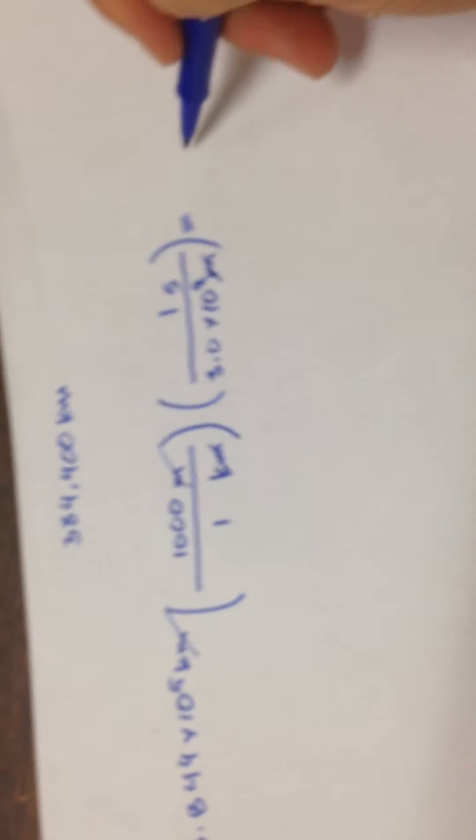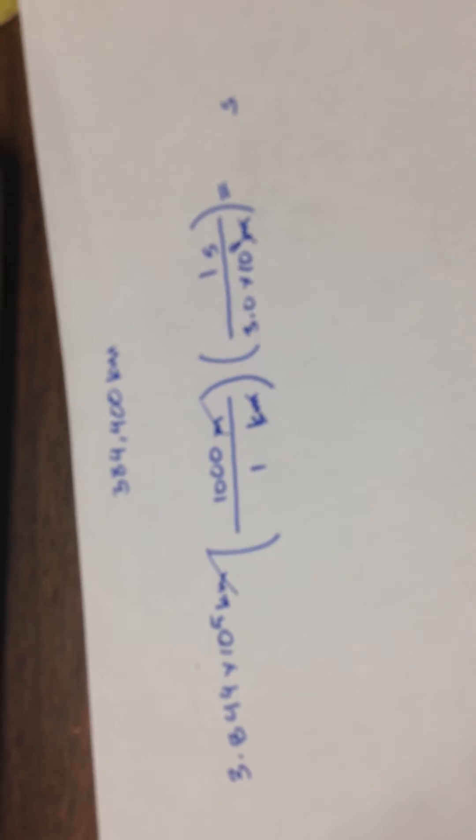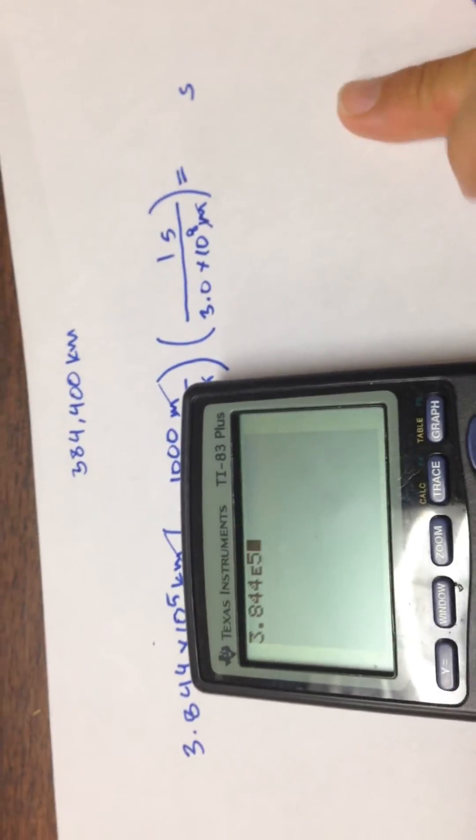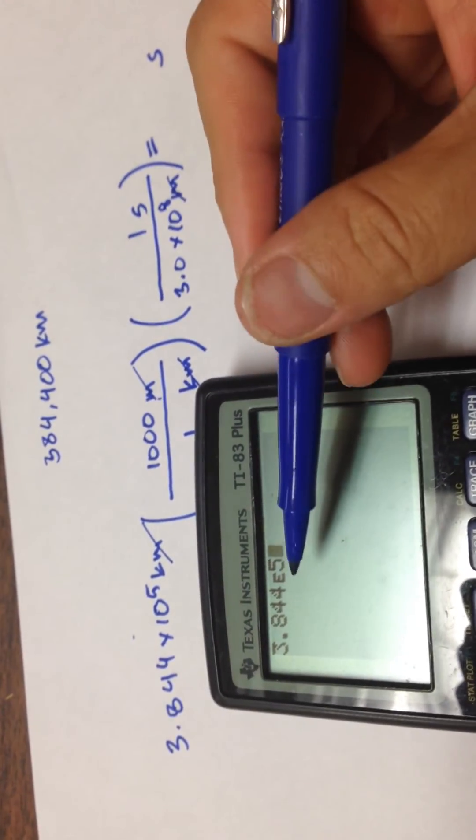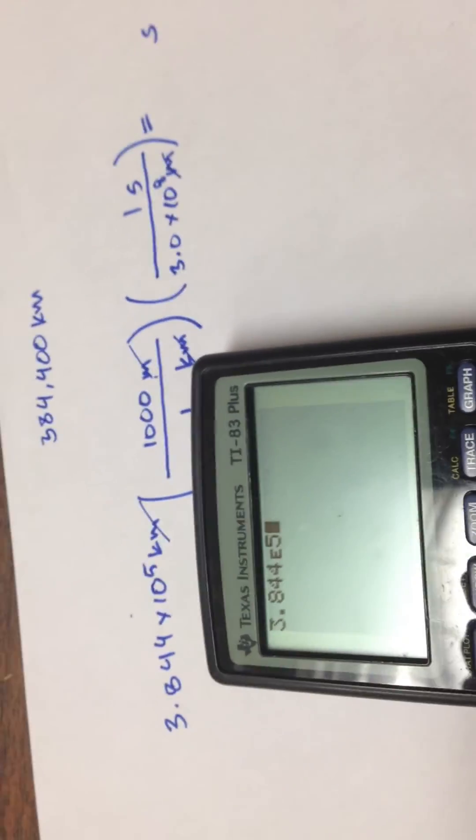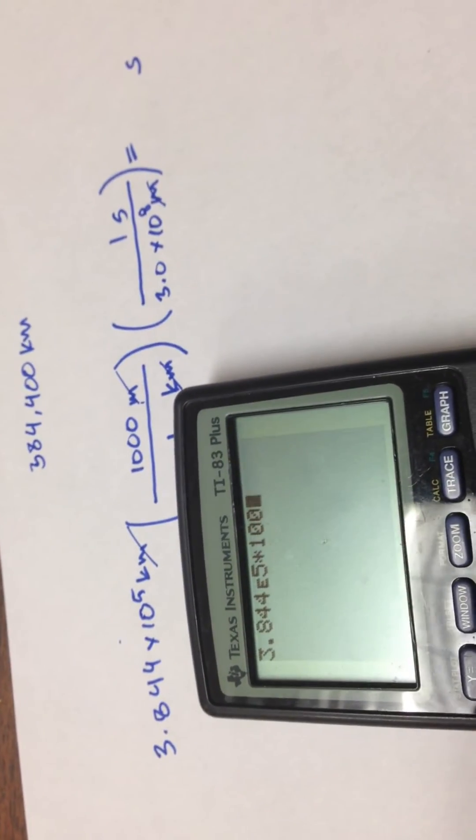When I do my calculation on the calculator, I've got to make sure that I do it in scientific notation, and I use the e. So I put 3.844 times 10 to the fifth. So multiply anything that's on the top, which is one thousand.